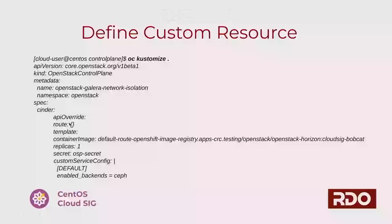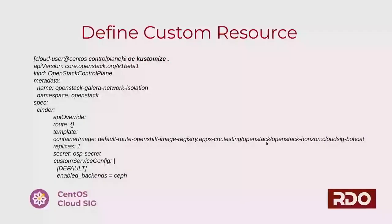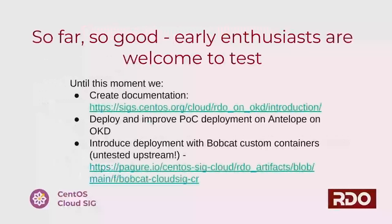There are some additional options — for example, when doing Ceph on Bobcat. First you need to define your own image, which is the custom container based on Bobcat. There's an additional field not in the default file called custom service config, which is used for overwriting the default OpenStack service configuration — for example, enabling Ceph. Early enthusiasts are very welcome to test, and we welcome any feedback. We have documented all our work in the six-centers documentation, where you'll find all the details, cookbooks, and tips on how to deploy.